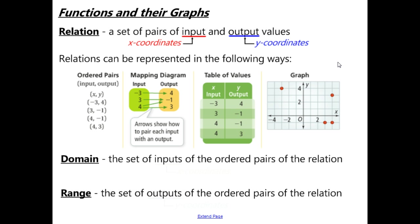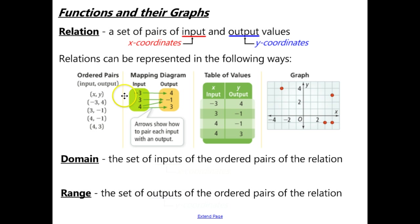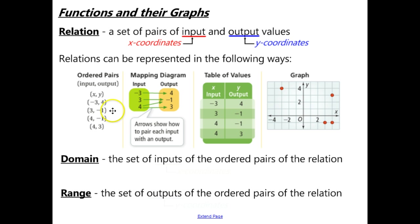Relations can be represented in the following ways. Ordered pairs give the input and output values together — these are coordinate points for the coordinate plane. A mapping diagram shows all the input values and y-coordinates in separate groups, with arrows showing how to pair inputs with outputs. So because the 4 has two arrows coming out of it, we have two different points with an x-coordinate of 4, and the negative 1 has two arrows pointing toward it, meaning two points share that y-coordinate. A table of values lists x's on the left, y's on the right, and of course a graph where you plot each point.